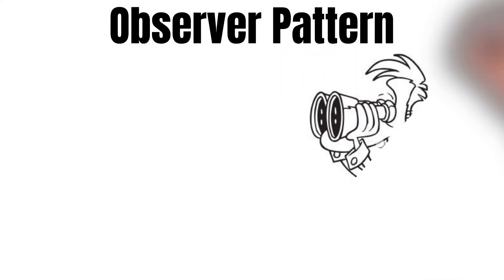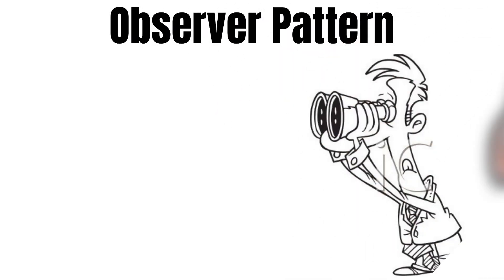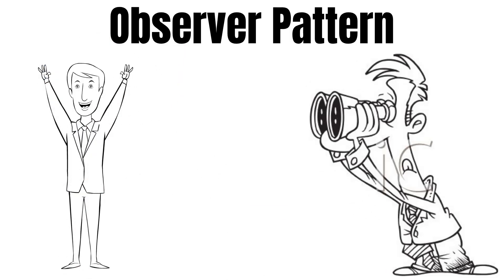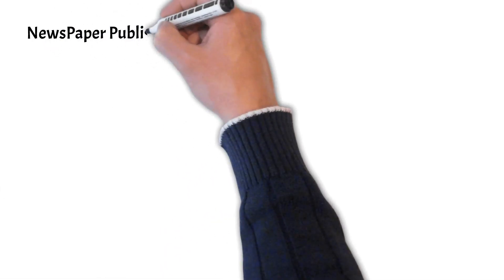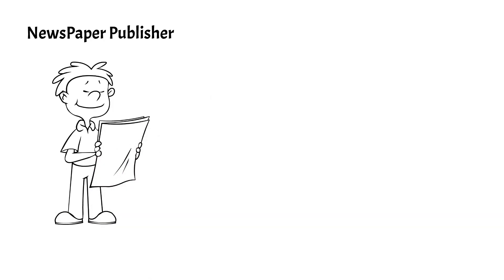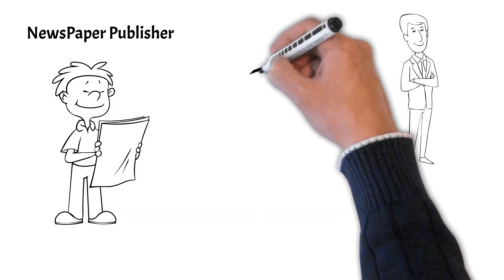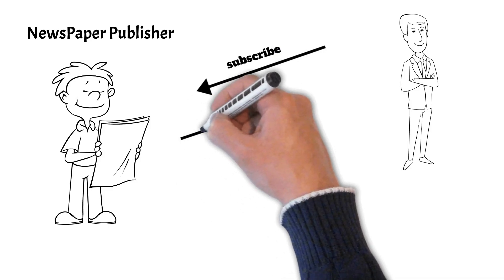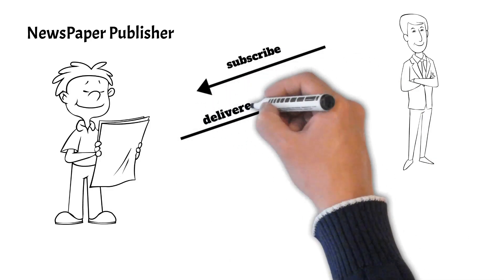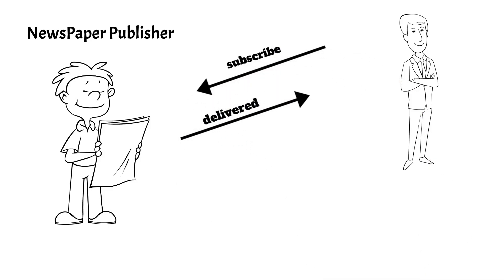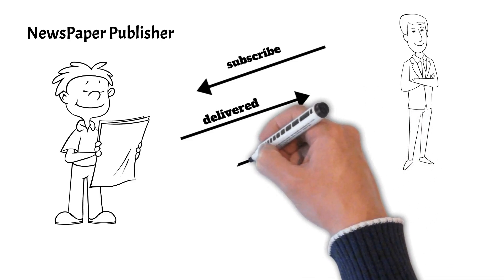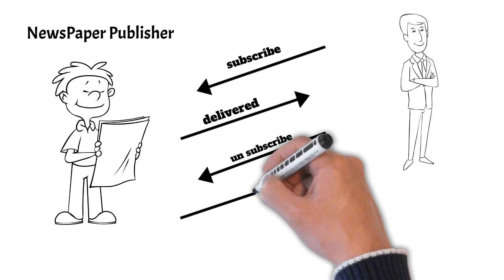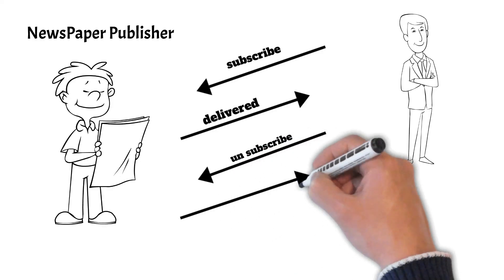Observer pattern — from the name it seems someone is observing something, and that's exactly what we are trying to achieve. Suppose a new newspaper publisher comes into business. You are interested in the paper and you subscribe to it. The newspaper gets delivered to you as long as you are subscribed. After a while you are no more interested in the newspaper, so you unsubscribe from the publisher.